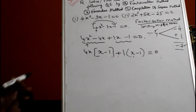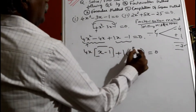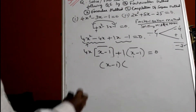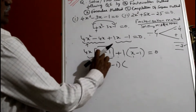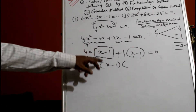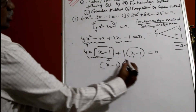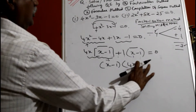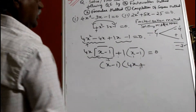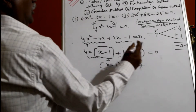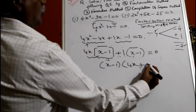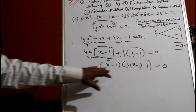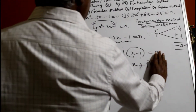Now look here again. x minus 1 is common to both terms. Take the x minus 1 and start a bracket. There are two terms: 4x into (x minus 1), and x minus 1 has come out. So 4x will go there, plus 1 into (x minus 1), and x minus 1 has come out, related to 1 equal to 0. This is called factorization.